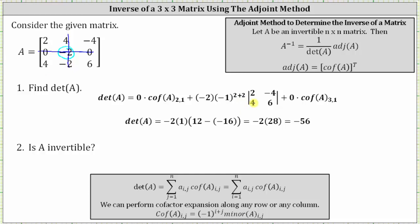Moving to the third entry in row two, which is another zero, we get plus zero times cofactor three comma one. Because we have a factor of zero, the product is zero. So simplifying, the first product and third product are both zero.